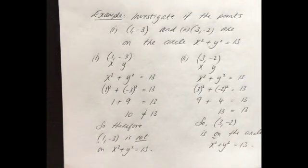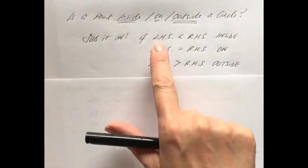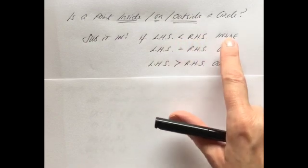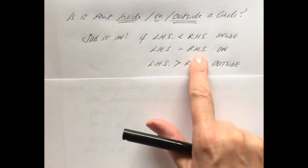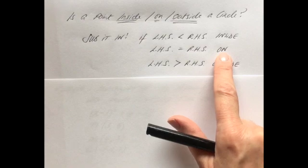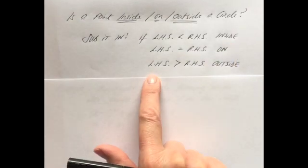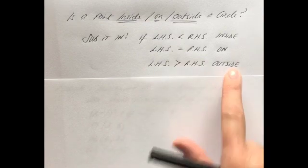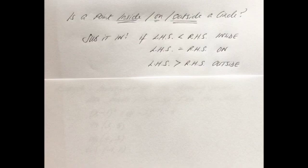Following on from that, we can investigate if a point is inside, on, or outside a circle using the same substitution approach. If we sub in the point and the left hand side is less than the right hand side, the point is inside the circle. If the left hand side equals the right hand side, the point is on the circle. And if the left hand side is greater than the right hand side, the point is outside the circle.